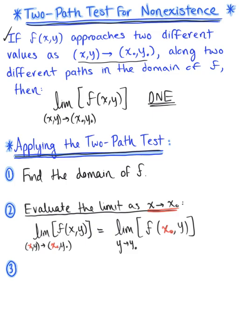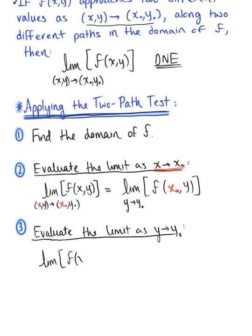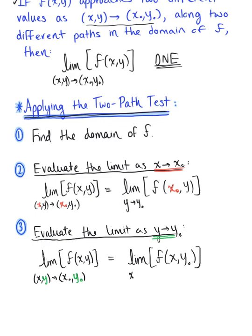Once we have done that, we want to do the same thing now for y. Step three is to evaluate the limit as y approaches y-naught. Starting with our original limit, we have the limit of the function f(x, y) as the point (x, y) approaches (x-naught, y-naught), but we are evaluating this limit as y approaches y-naught, so we are holding x fixed. This leaves us with the limit of the function f(x, y-naught) as x approaches x-naught — a limit of a function of a single variable.